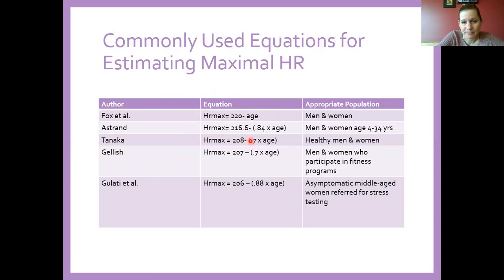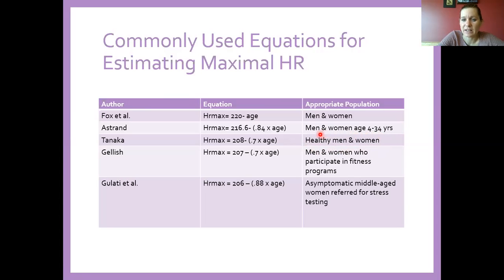This second method is a little more complex and is good for younger individuals — kids up to about 34 years old. Another method is 208 minus 0.7 times age, which is good for healthy adults, but not for a diseased population or extremely deconditioned people. It was developed using men and women who participate in fitness programs as the subject population.